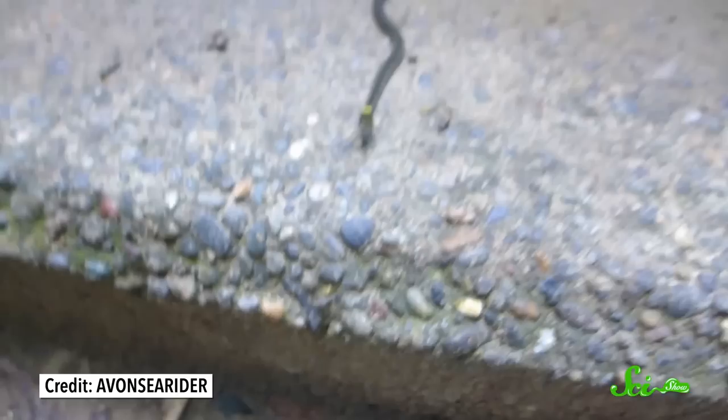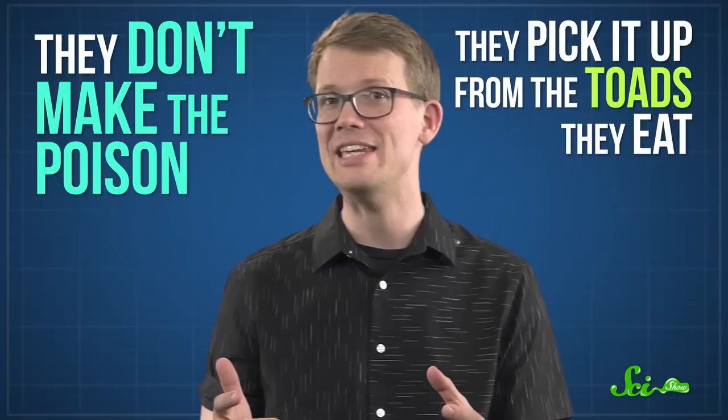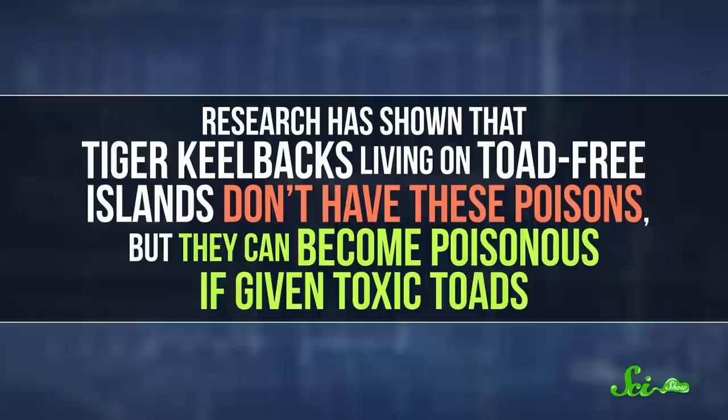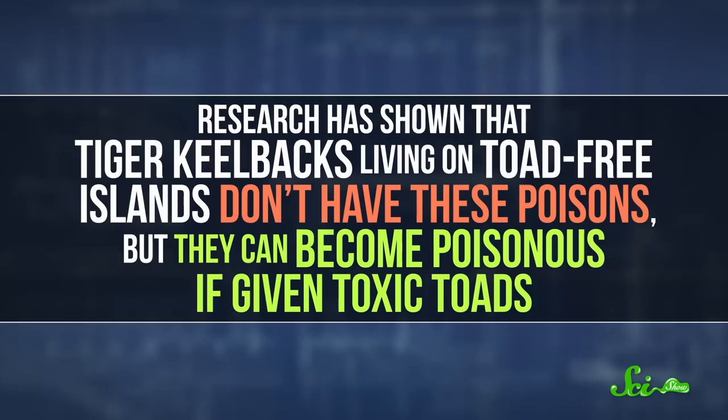Maybe the most interesting thing about this poison is that they don't make it. They pick it up from the toads they eat. Research has shown that tiger keelbacks living on toad-free islands don't have these poisons, but they can become poisonous if given toxic toads. And you'd think that a lack of poison would be a problem for a newborn snake, but it turns out mama keelbacks can pass toxins along to their young.